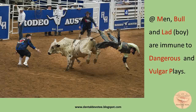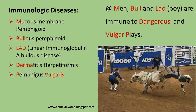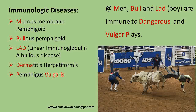Indeed, we can rarely see females in pictures like this. So the immunologic diseases which have vesiculobullous lesions are: mucous membrane pemphigoid, bullous pemphigoid, linear immunoglobulin A bullous disease, dermatitis herpetiformis, and pemphigus vulgaris.